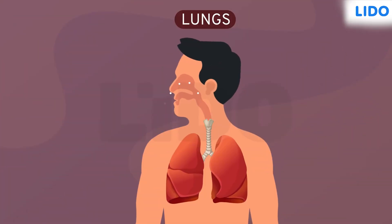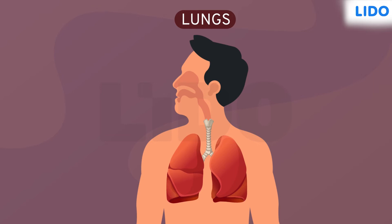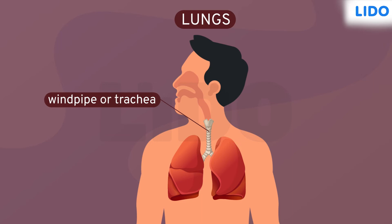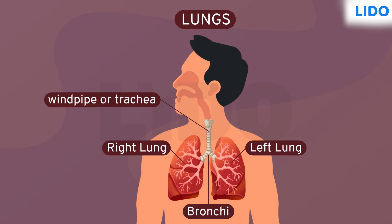The air enters our body through the openings of the nose and moves further into the body. Through the nose, the air enters into a long narrow tube called the windpipe or the trachea, which runs down the middle of the throat. The trachea branches out — one branch goes into the right lung and the other goes into the left lung. It is through the bronchi that the air enters into the left and right lungs.